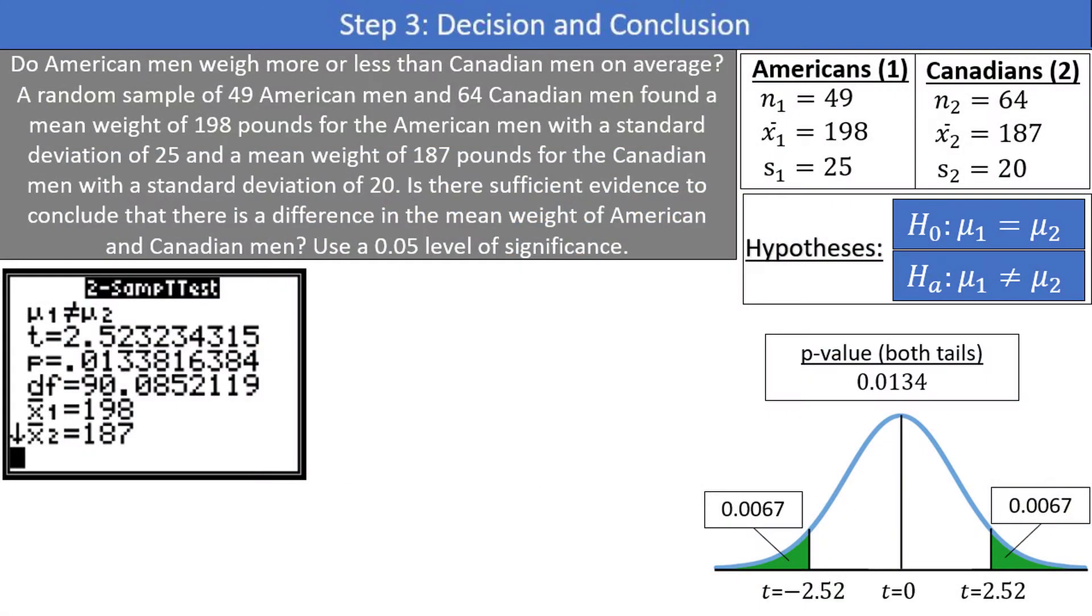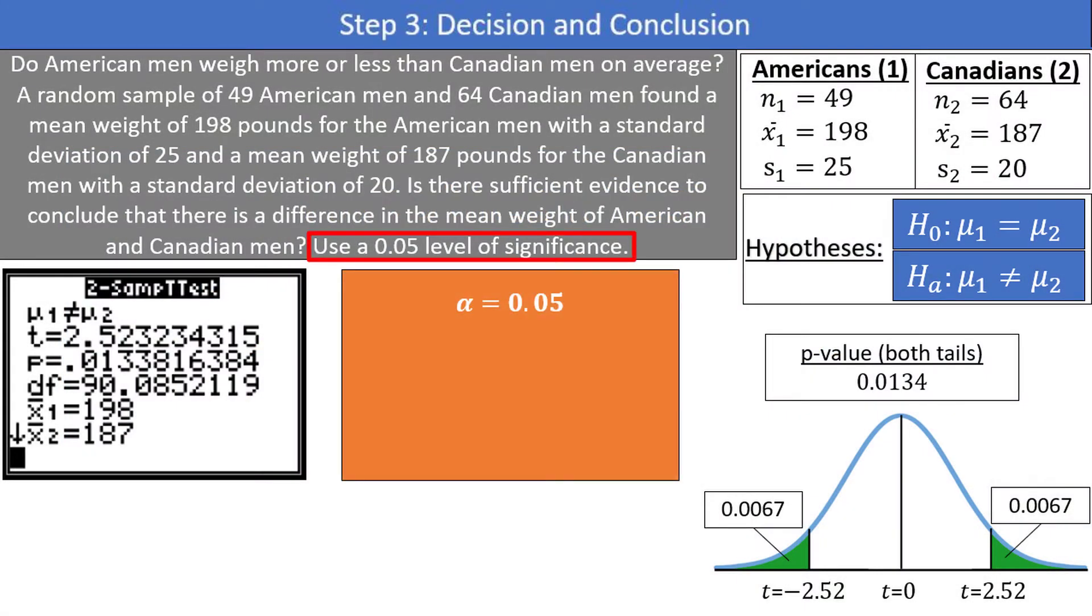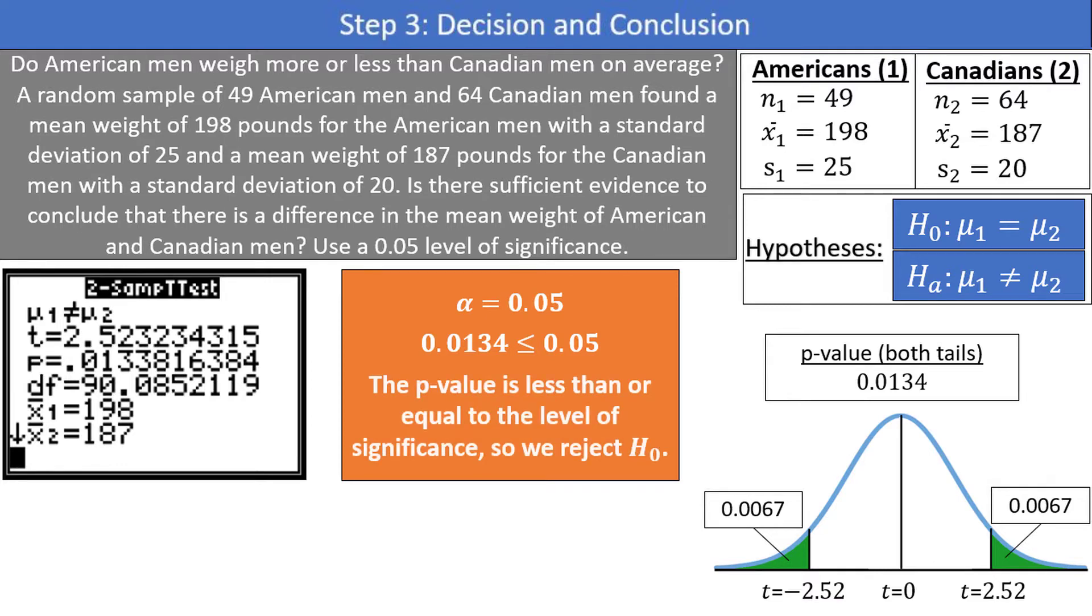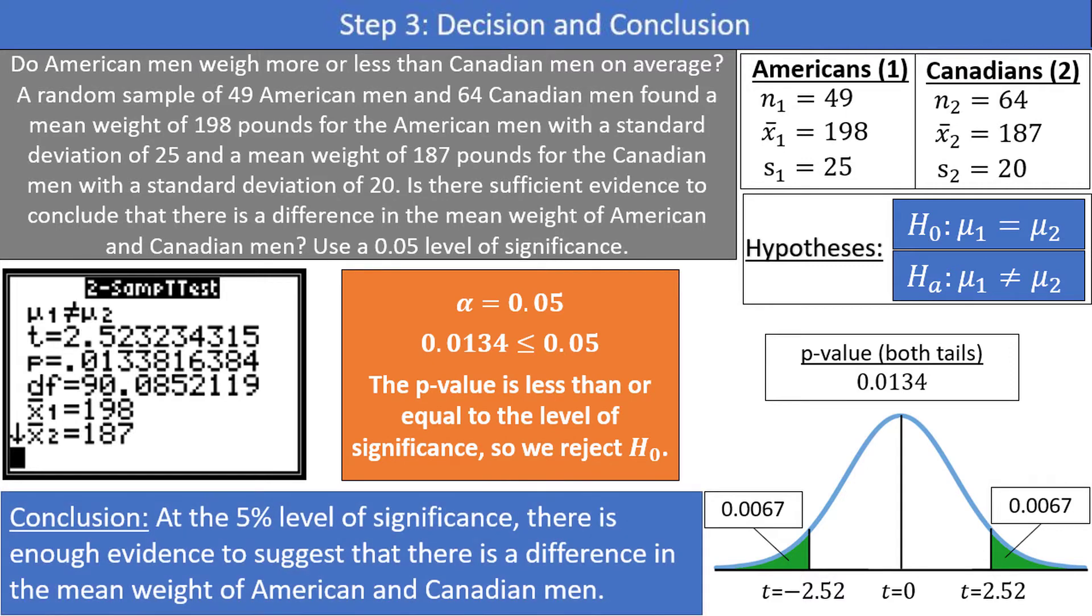In our case, the level of significance is 0.05, and the 0.0134 p-value is less than or equal to the 0.05 level of significance. The p-value is less than or equal to the level of significance, so we reject the null hypothesis. The p-value is low, so the null has to go. Our conclusion is, at the 5% level of significance, there is enough evidence to suggest that there is a difference in the mean weight of American and Canadian men. And we are done!